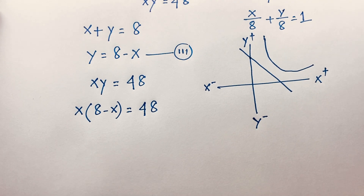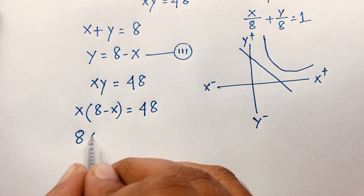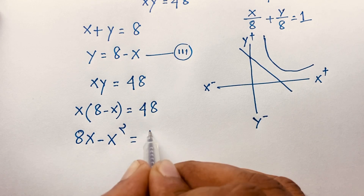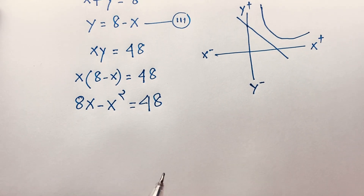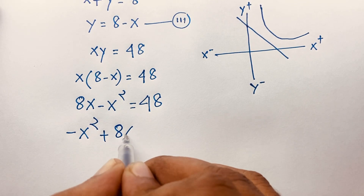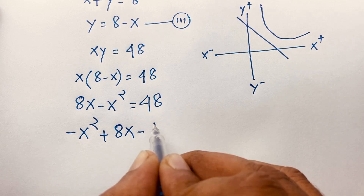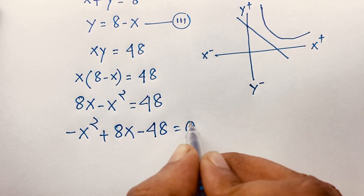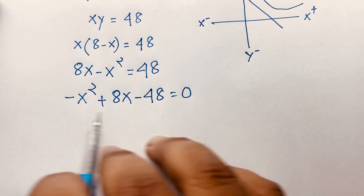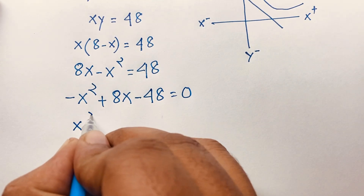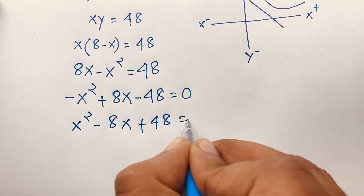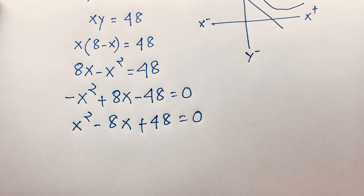Then, expanding this, it will be 8X minus X squared is equal to 48. Now you can see that in this expression, here is a nice quadratic equation. Rearranging: X squared plus 8X, and this expression will be negative 48 is equal to 0. Multiplying through by negative 1, it will be X squared minus 8X plus 48 is equal to 0. So we will find out here is a wonderful quadratic equation.